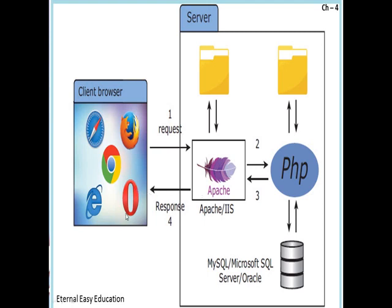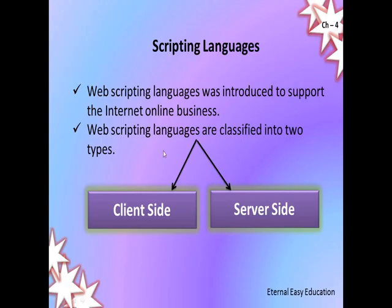Simply put, when you enter your username and password it is checked with your Google server. If your username and password is correct it will open your inbox; if it is wrong it will show a message saying whether your password is wrong or your email address is wrong. A web scripting language was introduced to support internet online business. Web scripting languages are classified into two types: client-side and server-side.